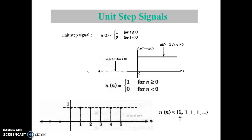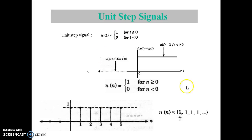Let us consider the Unit Step signal. The mathematical representation for the Unit Step signal: u(t) is equal to 1 for t greater than or equal to 0, and equal to 0 for t less than 0. In the graphical view, the Unit Step signal has the value 1 for t greater than or equal to 0, and value 0 for t less than 0.